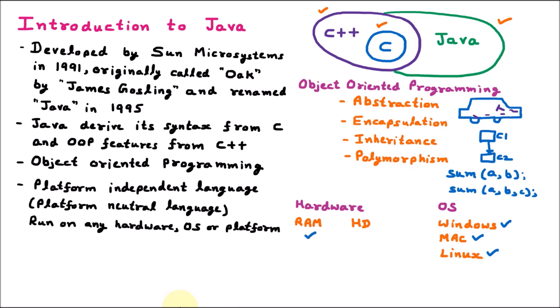Similarly, any RAM — whether 8GB, 4GB, or 2GB — doesn't matter. Any hard disk, whether SSD, 512GB, or 1TB, it can work. That means it is platform independent — there is no specification of a platform. Let's assume you are designing a game in Windows; that game can work on your mobile, laptop, iOS, Linux — everywhere. Java has a slogan: write once and run anywhere, because Java code can work on any OS or any hardware. We write code once, maybe in Windows, and that code can work everywhere.